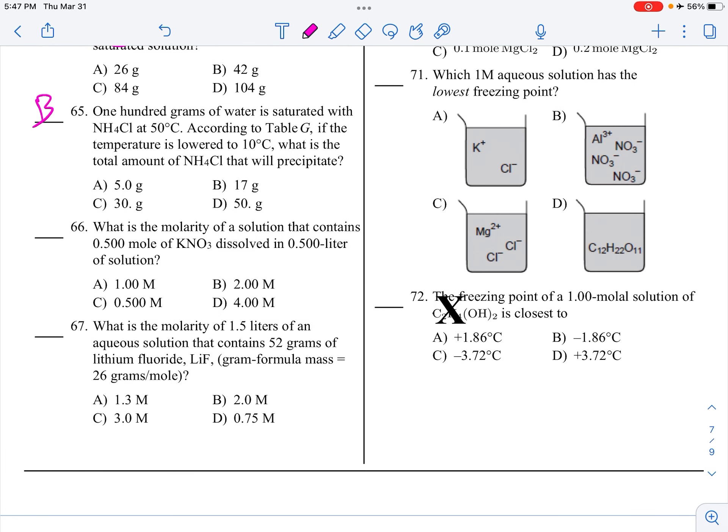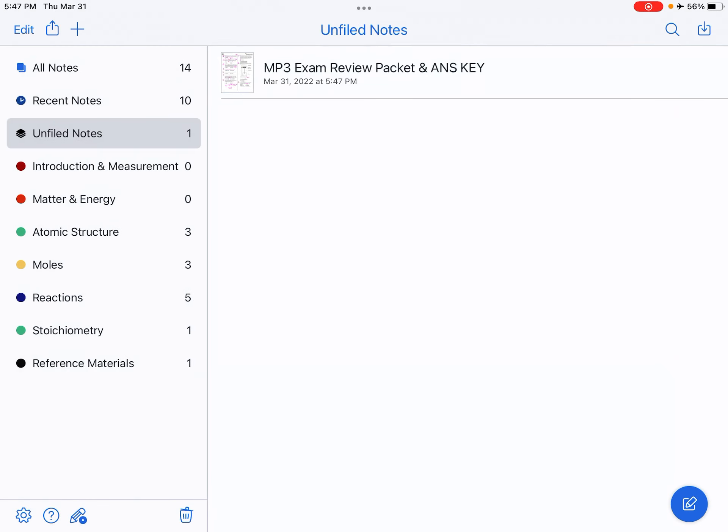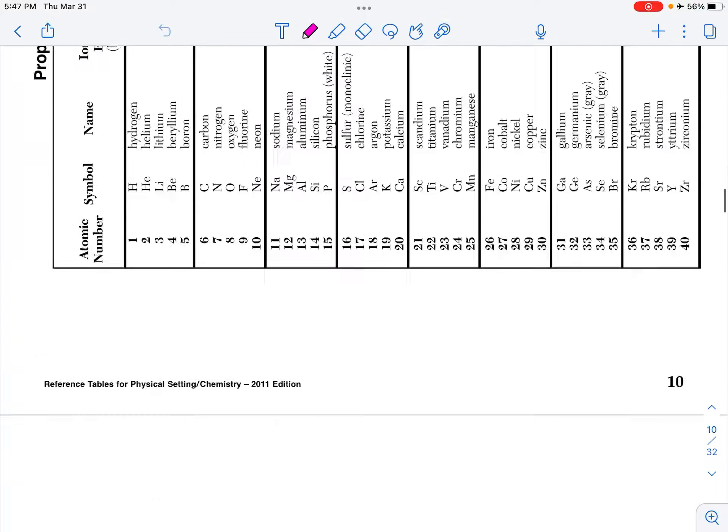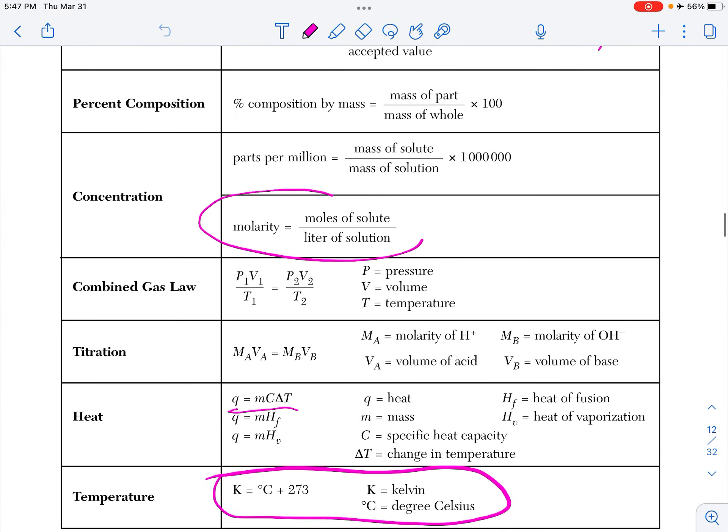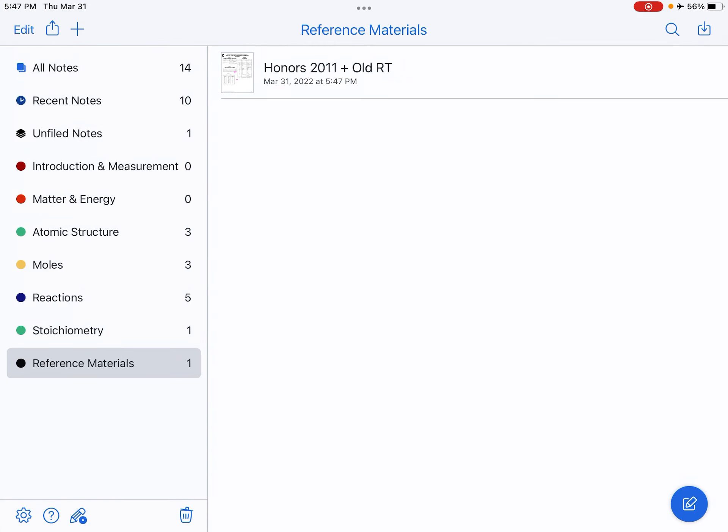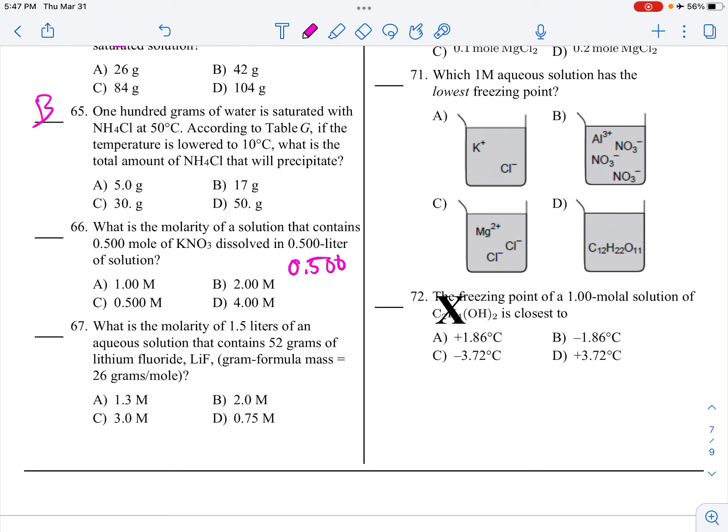What is the molarity of a solution that contains 0.5 moles of KNO3 in 0.5 liters of solution? The molarity formula is moles of solute over liters of solution. Our question is already all lined up for it. So it's 0.500 moles over 0.500 liters. It's 1. What is the molarity of 1.5 liters containing 52 grams? We don't have moles, we have grams. But they were nice enough to give us the GFM, so grams divided by GFM gives you moles. 52 divided by 26 is 2. So 2 moles divided by 1.5 gives me 1.3 repeating, so that's choice A.